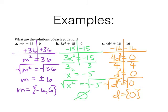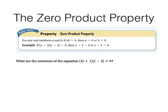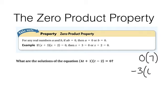The third and final method in this video is solving using the zero product property. The zero product property states that for any real numbers A and B, if A times B equals zero, then A equals zero, or B equals zero, or both. That has to make sense: if the product of two values is zero, then one of them has to be zero — it could be zero times 7, or negative 3 times zero.